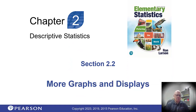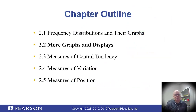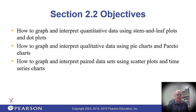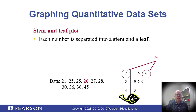We're in the middle of chapter two and we're going to talk about more graphs and displays. We talked about frequency distributions last time, and next time we'll get started on a bit more of the numbers. In the meantime, let's wrap up graphs and displays. Here are some of the things we're going to do: stem and leaf displays, dot plots, pie charts, Pareto charts, scatter plots, and time series charts — all really handy when you're trying to explain what the data represents.